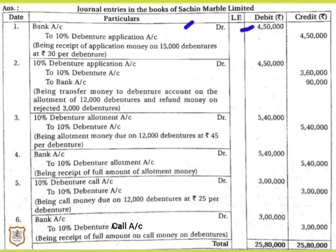Once the company decides on allotment, the respective amount will be transferred from Debenture Application to Debenture Capital Account. However, the full rupees 4,50,000 will not be transferred, because the company received more applications than it issued. The company issued 12,000 debentures but received applications for 15,000 — meaning 3,000 excess applications were received.